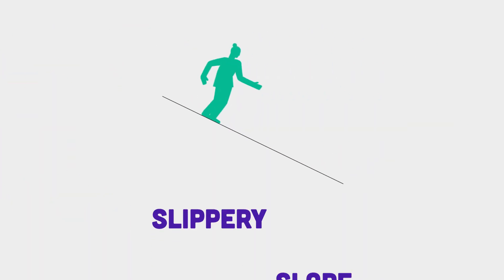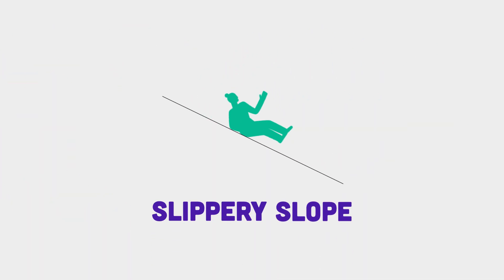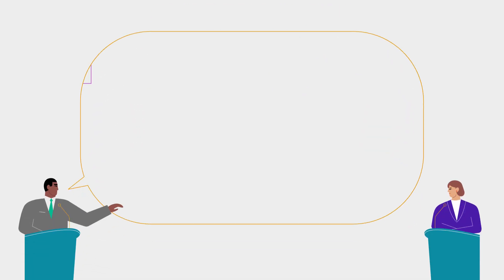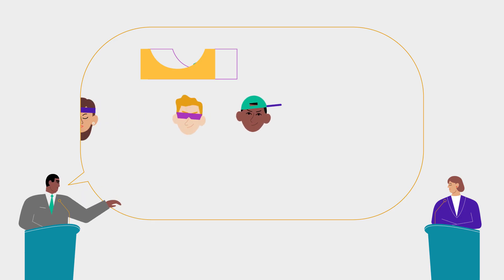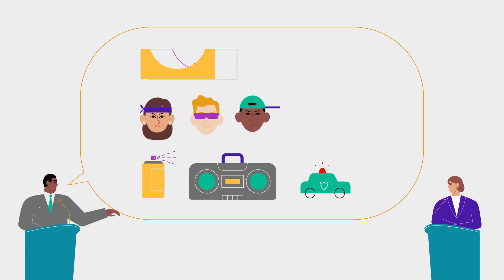A slippery slope is when someone argues that a small change will have a disastrous impact. For example: 'If we allow a skate park to be built in our town, there will be punks roaming the streets at all hours. We'll never have peace and quiet again.'